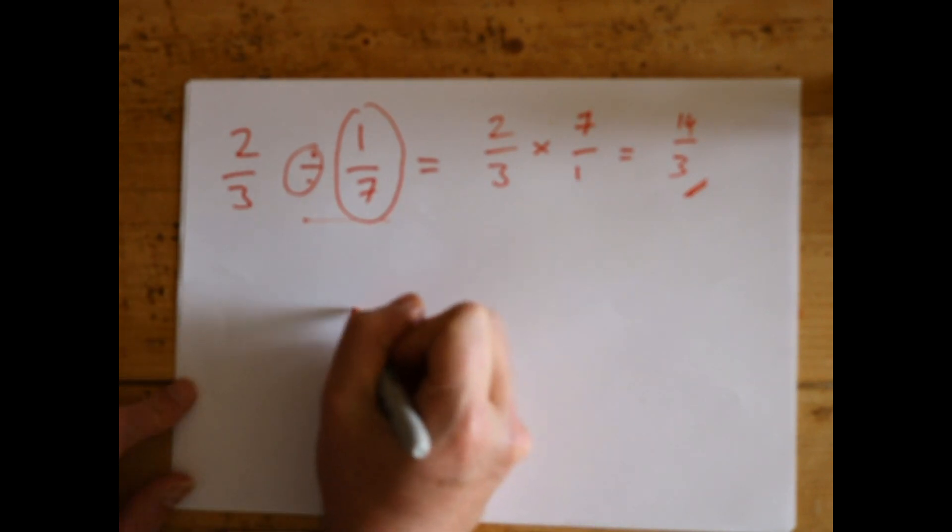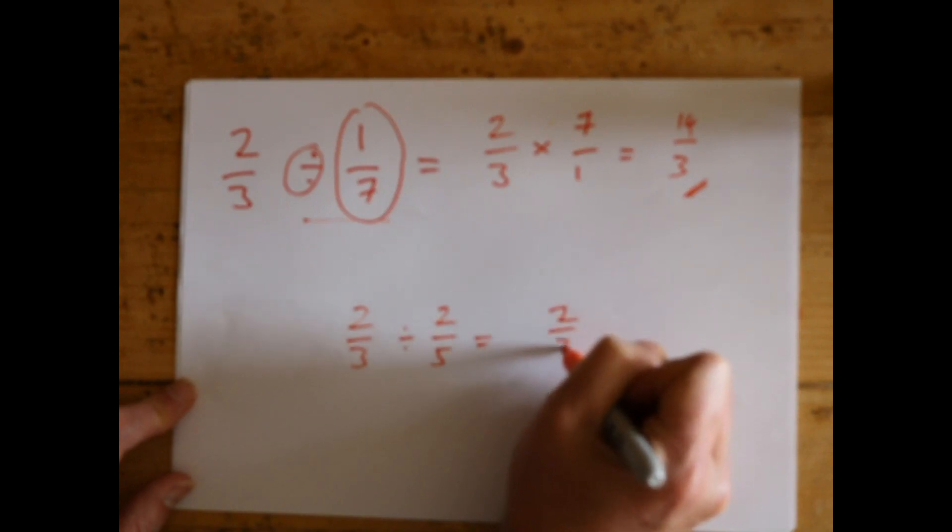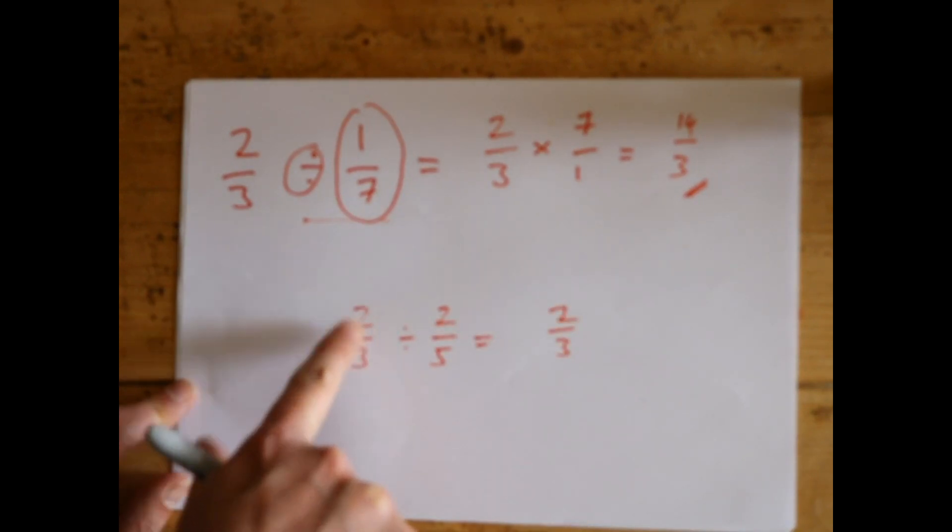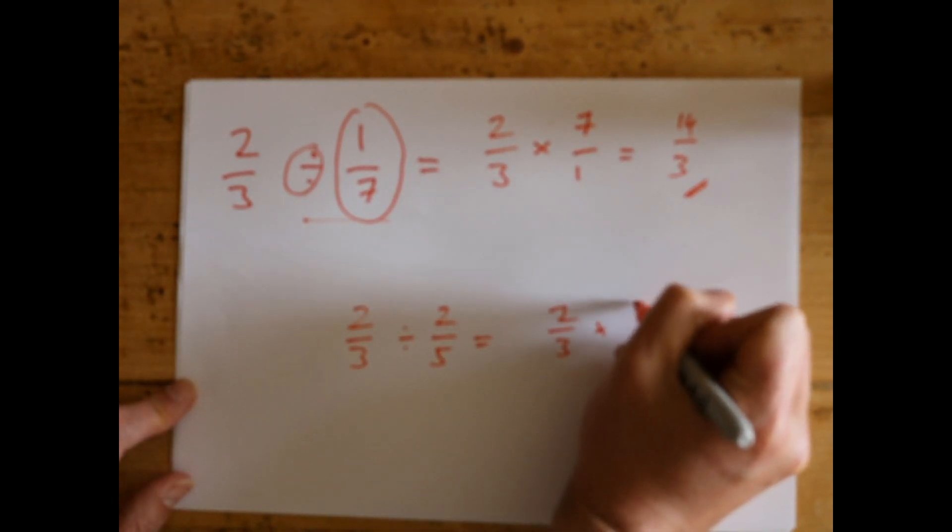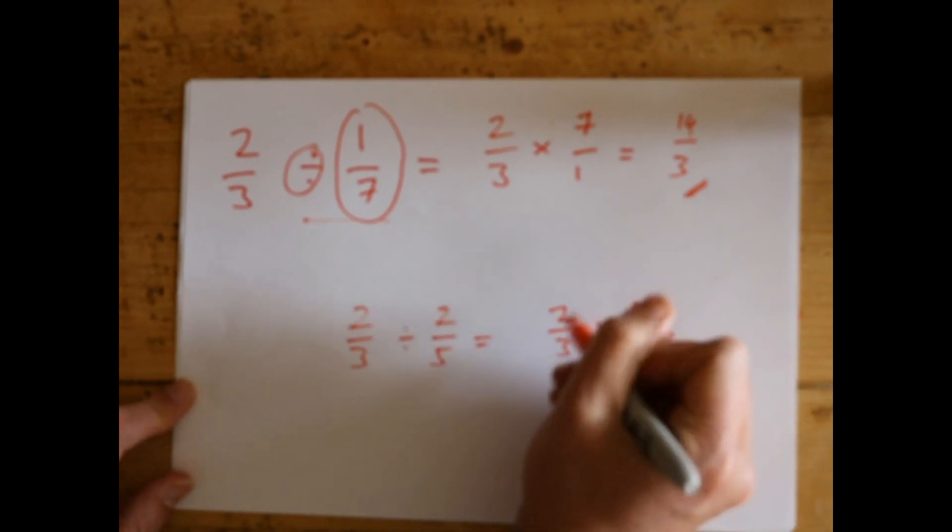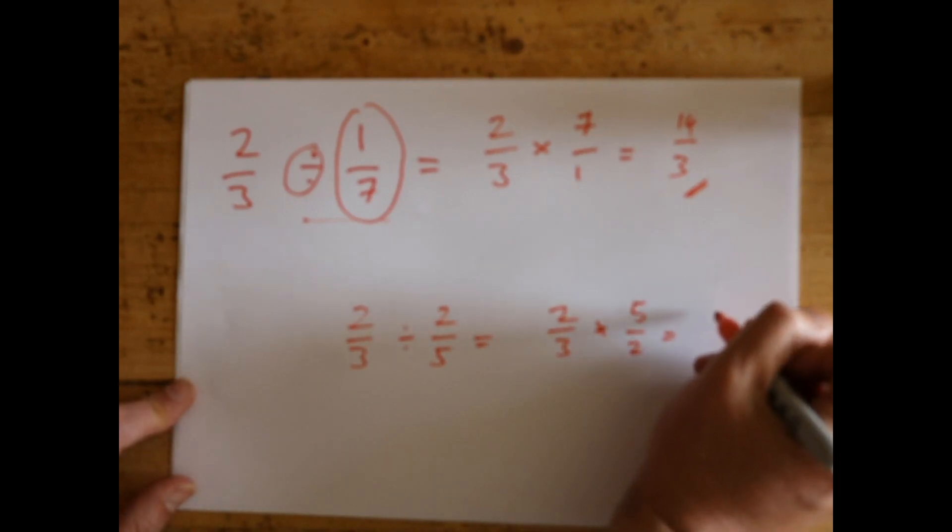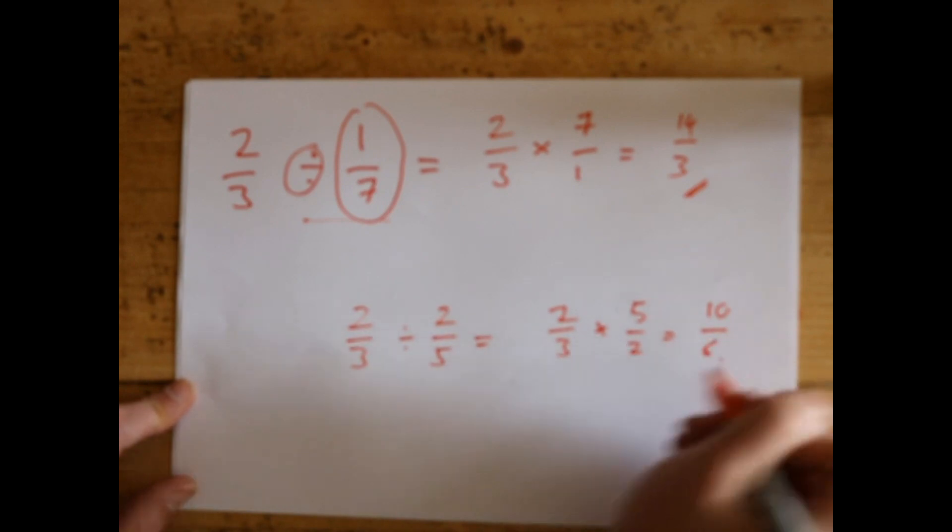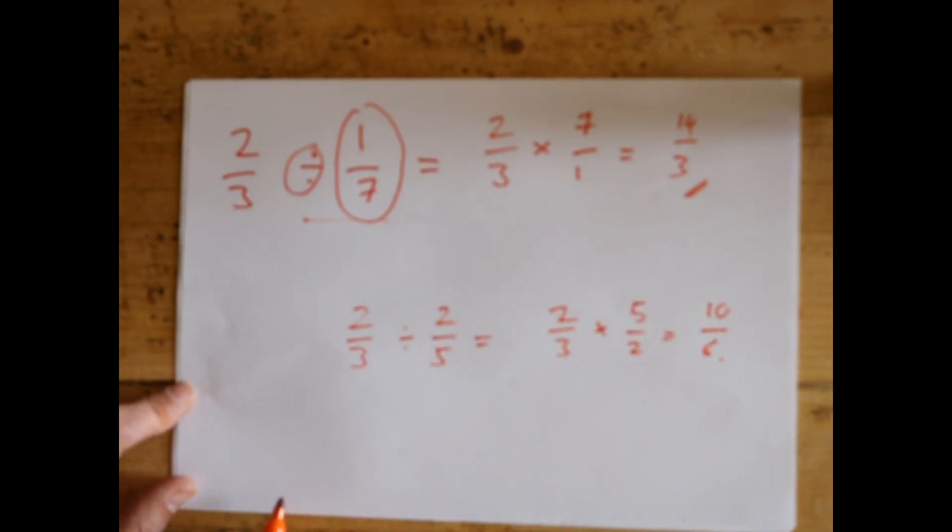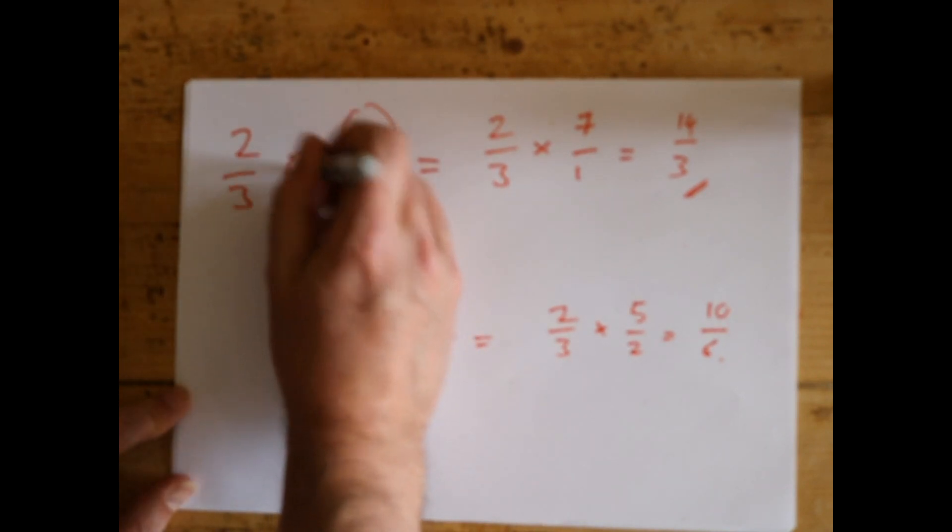For dividing any fractions you want - 2/3 divided by, I don't know, 2/5 - just rewrite it. Leave the first one, don't swap the first one at all. Divide we swap to times, and because we swap that, we need to swap 2/5 to 5/2. Perfectly reasonable. Two times five is ten, three times two is six. Again we've got a top-heavy fraction, and I'll show you how to do that in a different video.